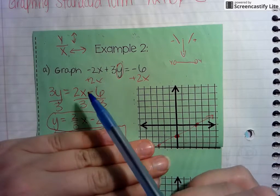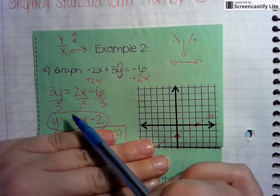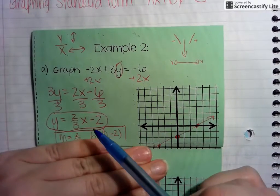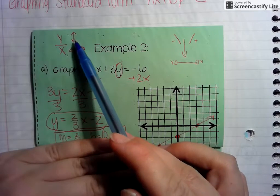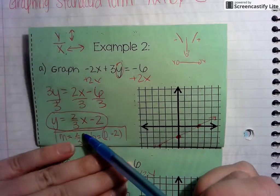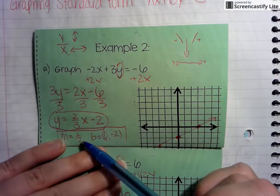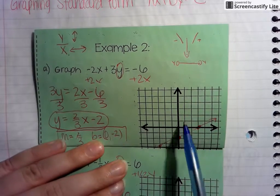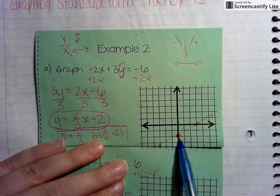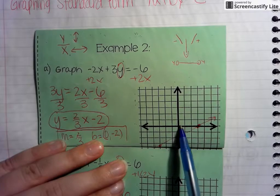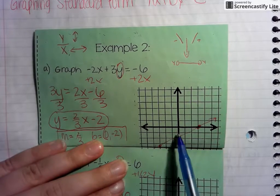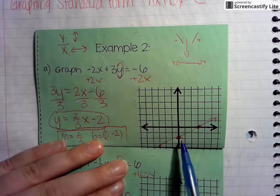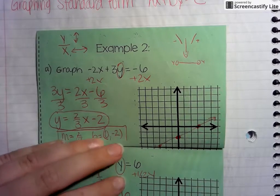To identify our slope, notice it has to be in y equals mx plus b — which it is. So my m value, my slope, is going to be 2 over 3. My b value is going to be (0, negative 2). With slope, you always want to graph going up or down first, then moving left or right. So we go up or down 2, then left or right 3. I've plotted my first point at (0, negative 2) — you always plot the y-intercept first. Going up 2 and to the right 3 gives 2/3. I could also go down 2 and left 3, because negative over negative gives a positive.